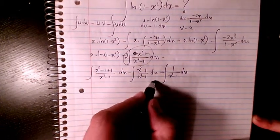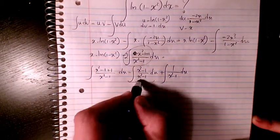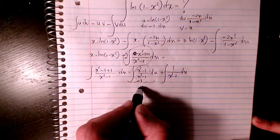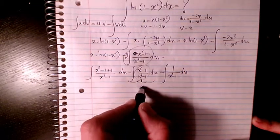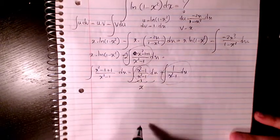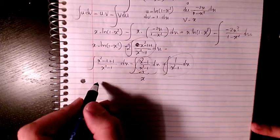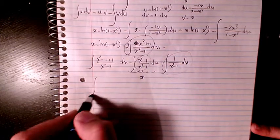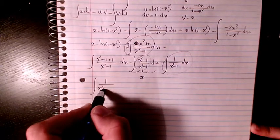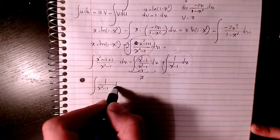The first part simplifies to just 1, so that integration gives x. The remaining part is the integral of 1 over (x squared minus 1) dx.